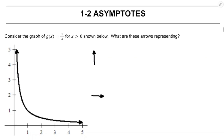Welcome. In this video, we're going to look at the relationship between asymptotes on the graph of a function and limits. I'm showing you the graph of g of x equals 1 over x where x is greater than 0. The main question we're looking at today is what is the meaning of those arrows?